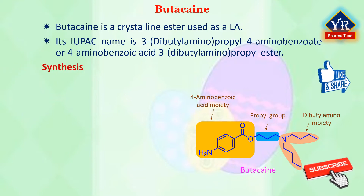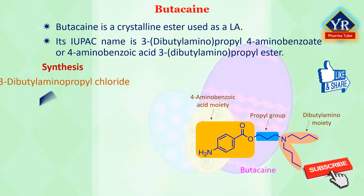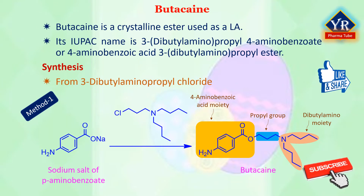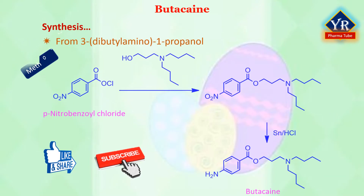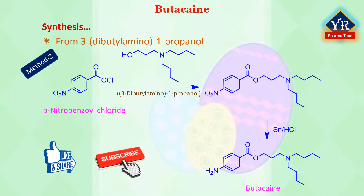Butacaine may be prepared by two methods. The first method involves the reaction between each mole of sodium salt of para-amino-benzoic acid with 3-dibutylaminopropyl chloride, during which a molecule of sodium chloride is removed, forming butacaine. In the second method, 3-dibutylamino-1-propanol is coupled with paranitrobenzyl chloride and the corresponding nitro group is subsequently reduced to an amino group by treatment with tin and hydrochloric acid catalyst.